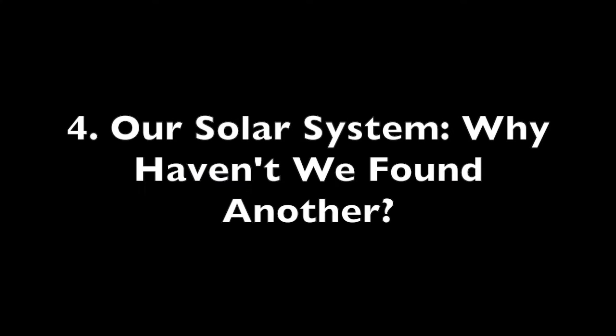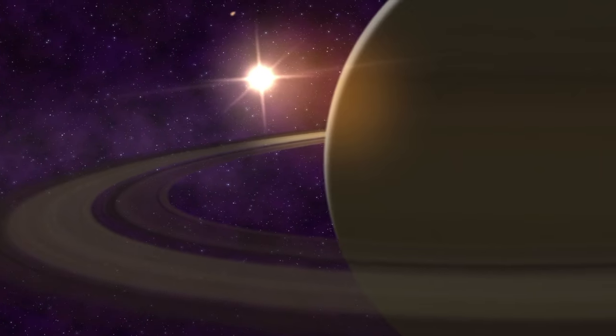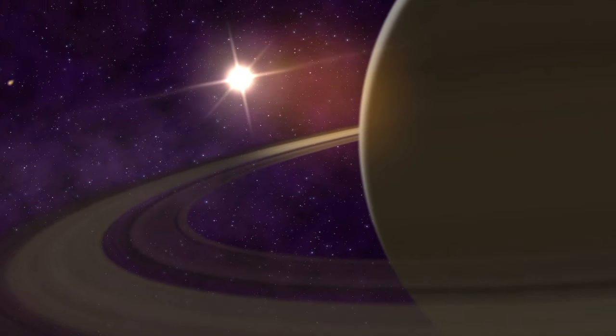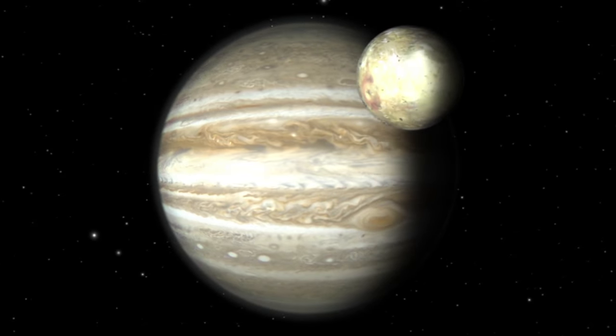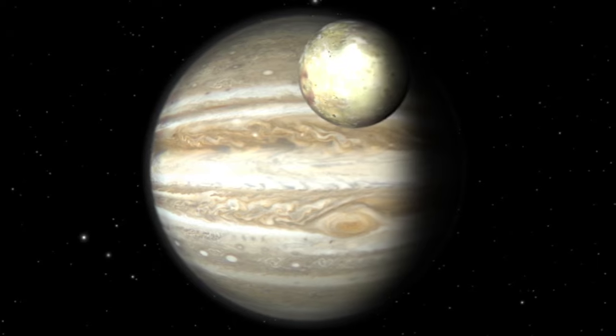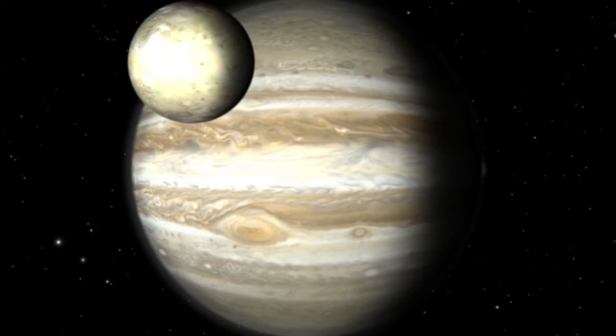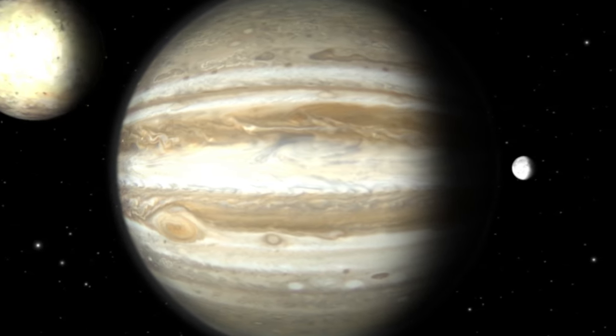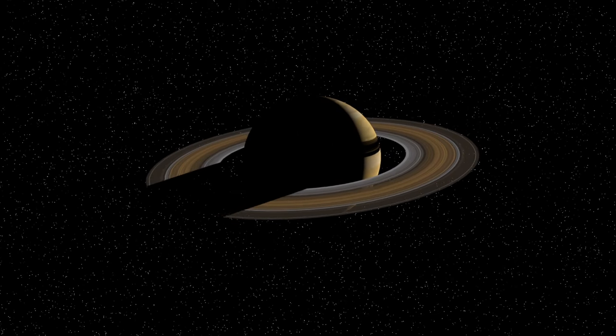Number 4: Our solar system, why haven't we found another? One thing we've noticed recently as we've studied exoplanets is that so far, no other star system we've seen looks quite like this one. For example, an entire common class of exoplanet known as super-Earths is unknown here. The solar system has no super-Earth. The list goes on. This solar system has no hot Jupiters, brown dwarfs, and where our star system really stands out is that it has an inhabited planet with a civilization living on it.